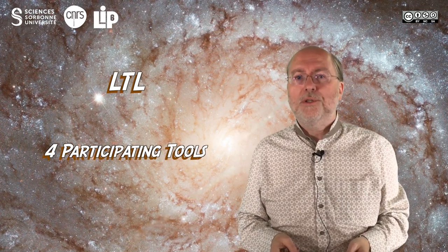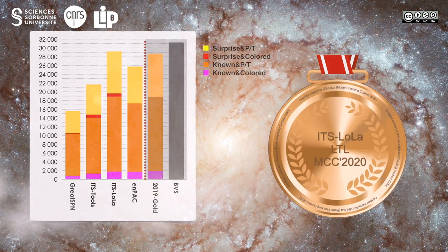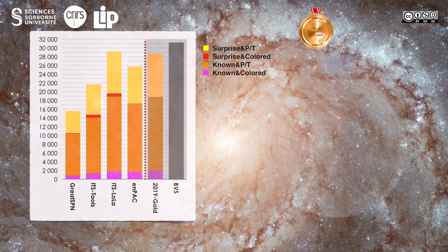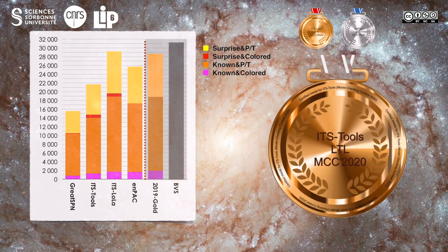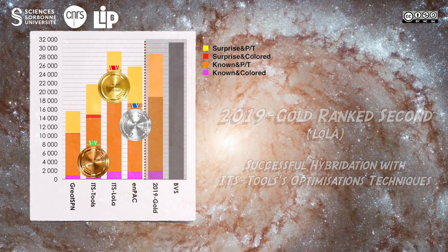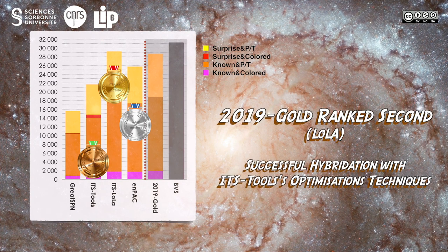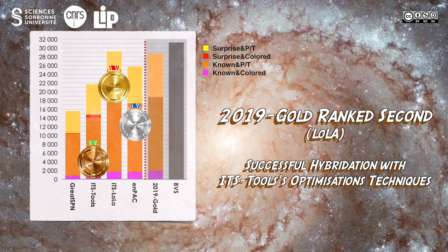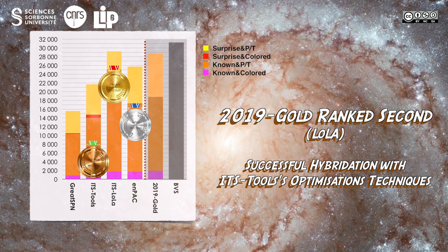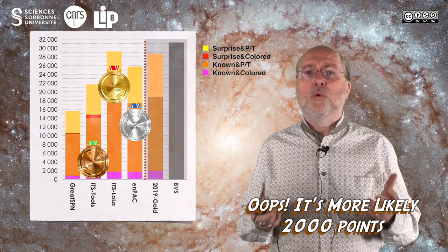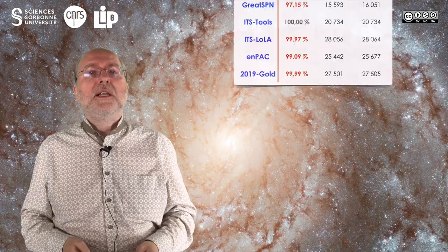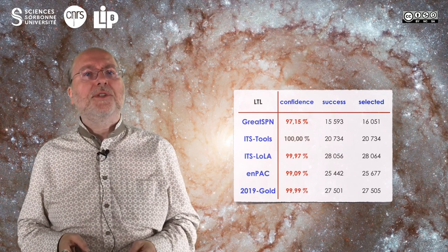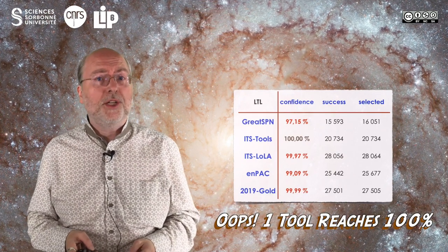For the LTL family of examinations, only four tools did participate. The gold medal goes to ITS-Lola, then NPAC grabs the silver one, and ITS-Tool gets the bronze medal. They are followed by GreatSPN. The 2019 gold medal would be ranked second — it was Lola — so once again we can see a benefit of combining techniques from different tools. BVS is about 1,000 points ahead of the winner this year, with a high confidence rate even if only two tools reach 100%.